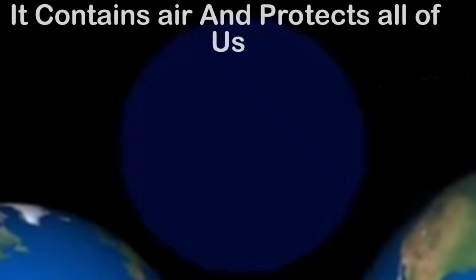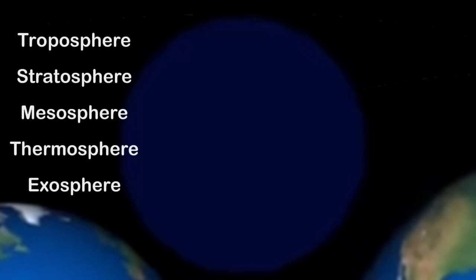The atmosphere's the next sphere that we will look at. It contains Earth's air and protects all of us — now how about that? The atmosphere's made up of five layers, now you know. One layer blocks radiation from the sun — it's called the ozone.